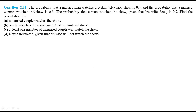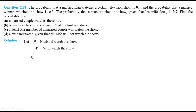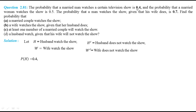Now we come to problem 2.81. The probability that a married man watches a television show is 0.8, and the probability that a married woman watches the show is 0.5. The probability that a man watches the show given that his wife does is 0.7. Let H denote the event that the husband watches the show, W that the wife watches the show, H complement that the husband doesn't watch, and W complement that the wife doesn't watch. The probability of H is 0.8, probability of W is 0.5, and probability of H given W is 0.7.